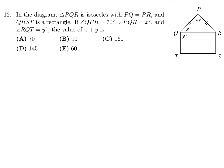In the diagram, triangle PQR is isosceles with PQ equal to PR, and QRST is a rectangle. Angle QPR is 70, PQR is X, and RQT is Y. What is the value of X plus Y? Because it's isosceles, that means this angle is the same as this angle. So if that's X, the other one is X also. They told me QRST is a rectangle, so therefore these are all right angles.